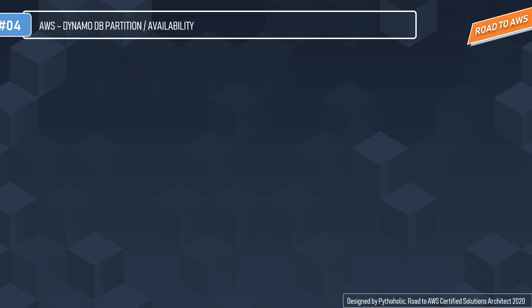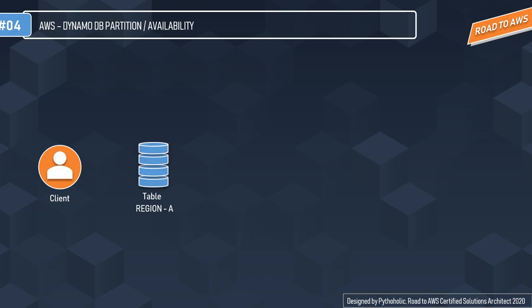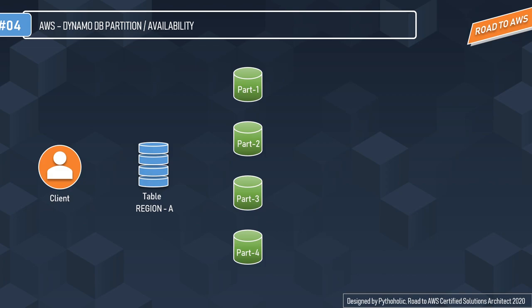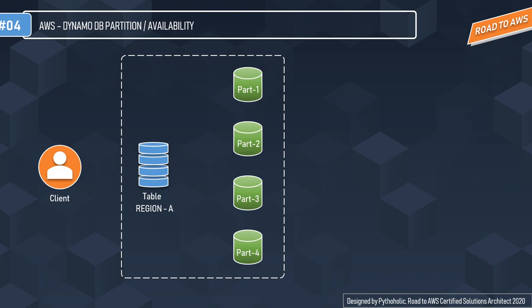As a solutions architect, you'll often be asked about DynamoDB partitions, availability, and replication. Amazon DynamoDB stores data in partitions — allocations of storage backed by SSDs, automatically replicated across multiple Availability Zones within the AWS region. When you create a table, its initial status is 'creating,' during which DynamoDB allocates sufficient partitions to handle your provisioned throughput requirements. You can begin writing and reading data only after the table status changes from 'creating' to 'active.'